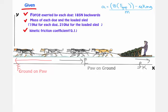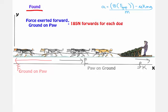Let's review what we have for this question. We have the force exerted by each dog, all the masses, and the friction coefficient. And we found the force exerted forward for each dog, which is the force ground on paw.